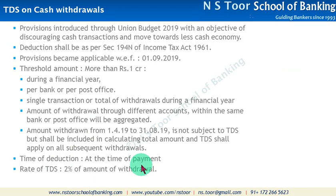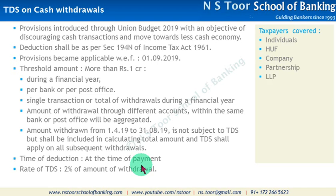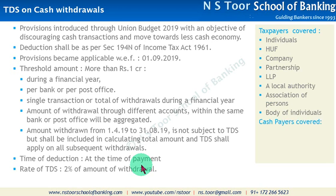Friends, अब कौन-कौन से लोग इसमें covered होंगे - taxpayers हैं: individuals, HUF, companies, partnerships, limited liability partnerships, local authorities, association of persons, body of individuals - यह सारे के सारे इसमें covered होंगे. और cash payers - जो लोग यह cash दे रहे हैं bank और post office - so banking company सारी की सारी, इसी प्रकार से cooperative banks, और इसी प्रकार से post office.